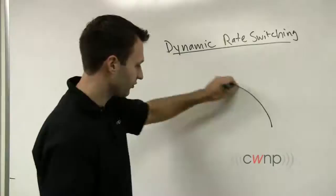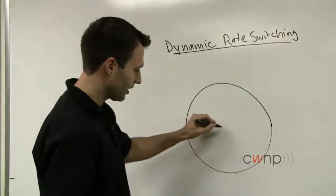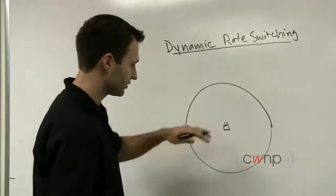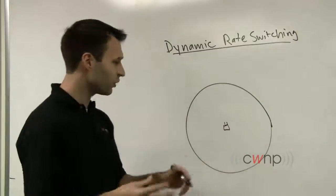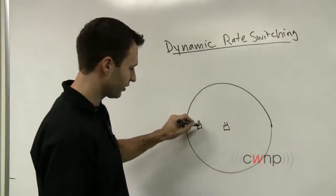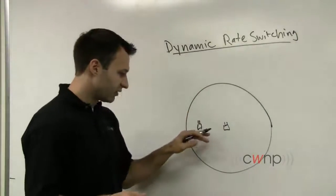In Wi-Fi networks, let's look at how this works. If you have an access point in the middle of its service area, and within that service area you have a client device, when it first associates...